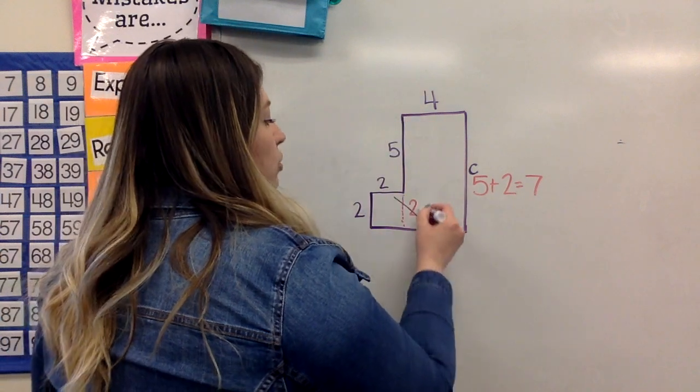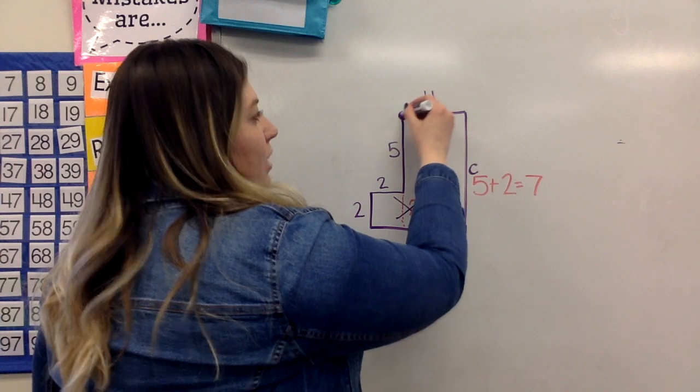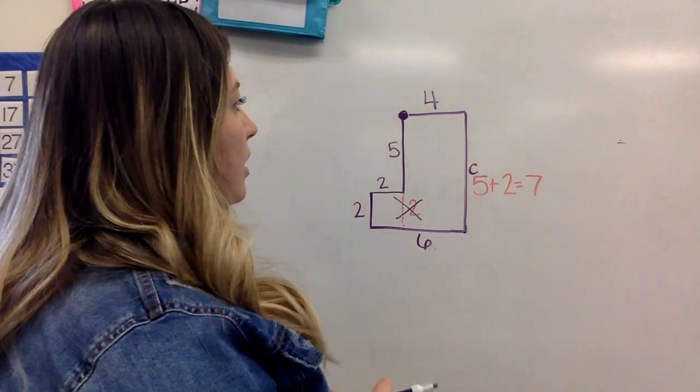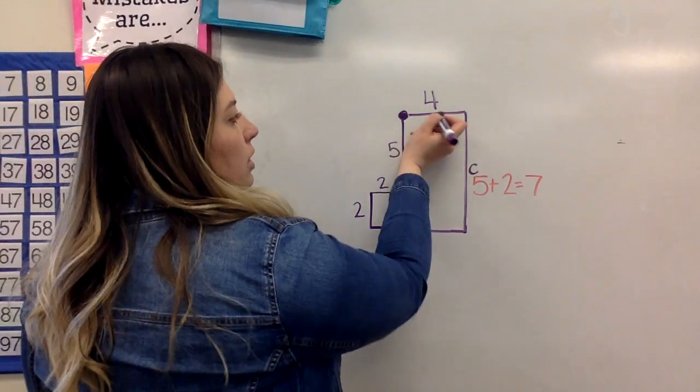And actually, I'm going to cross this out so I don't look at it when I'm adding up my sides, because I don't want to get confused while I'm doing that. So starting over here, I have four